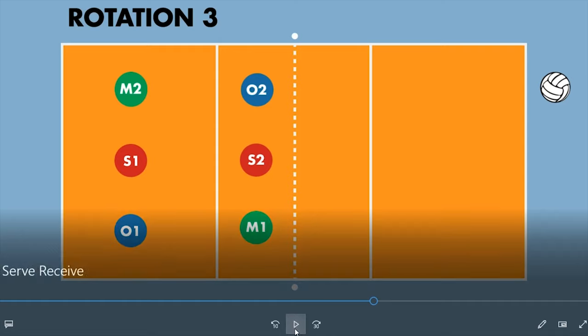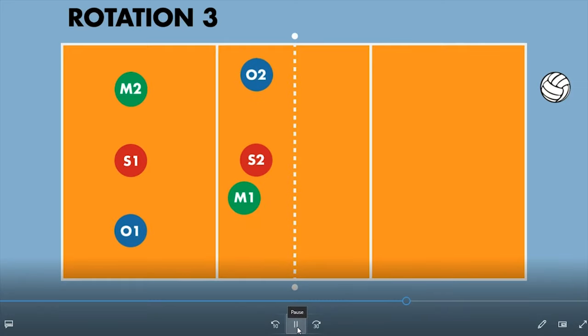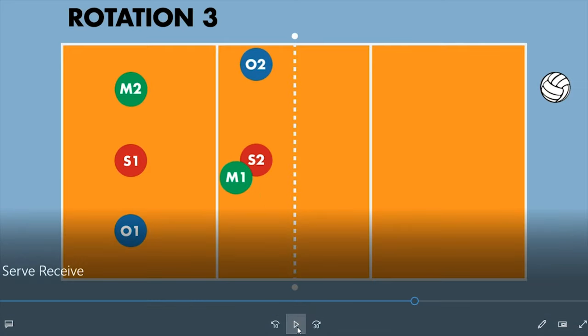Rotation 3. In a 4-2, there are only three rotations. So here we are. Our setter 2 here. And our outside is over here. So the outside can hang out here. Our middle just needs to come in a little bit. So this is what that's going to look like. Let me set up for serve receive on rotation 3.